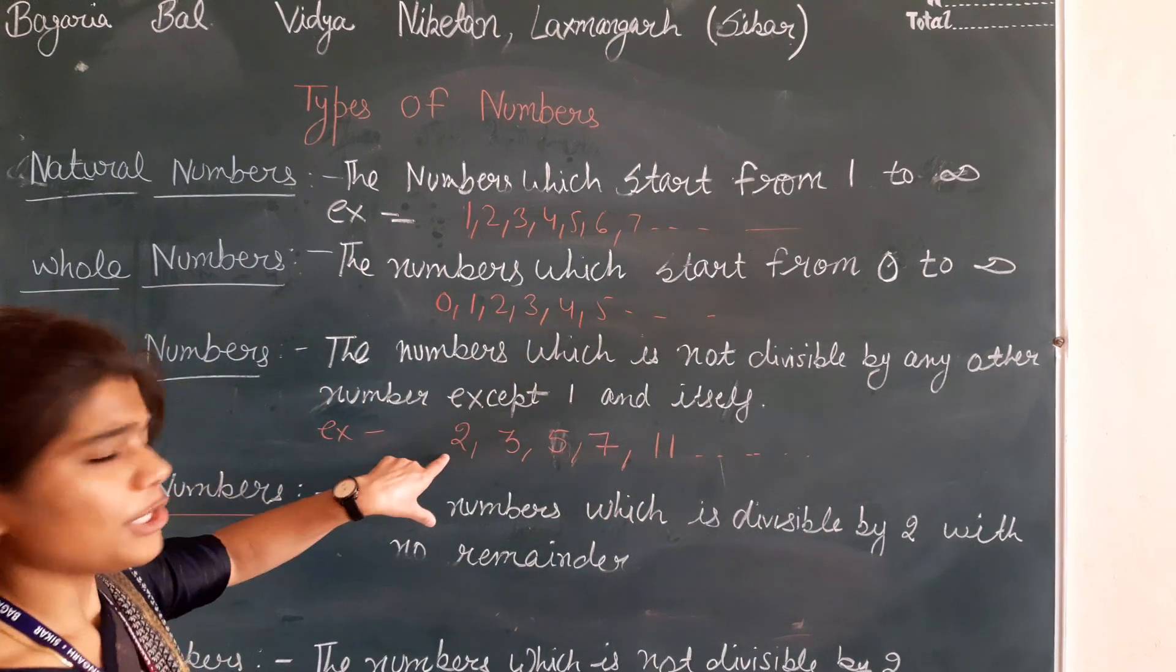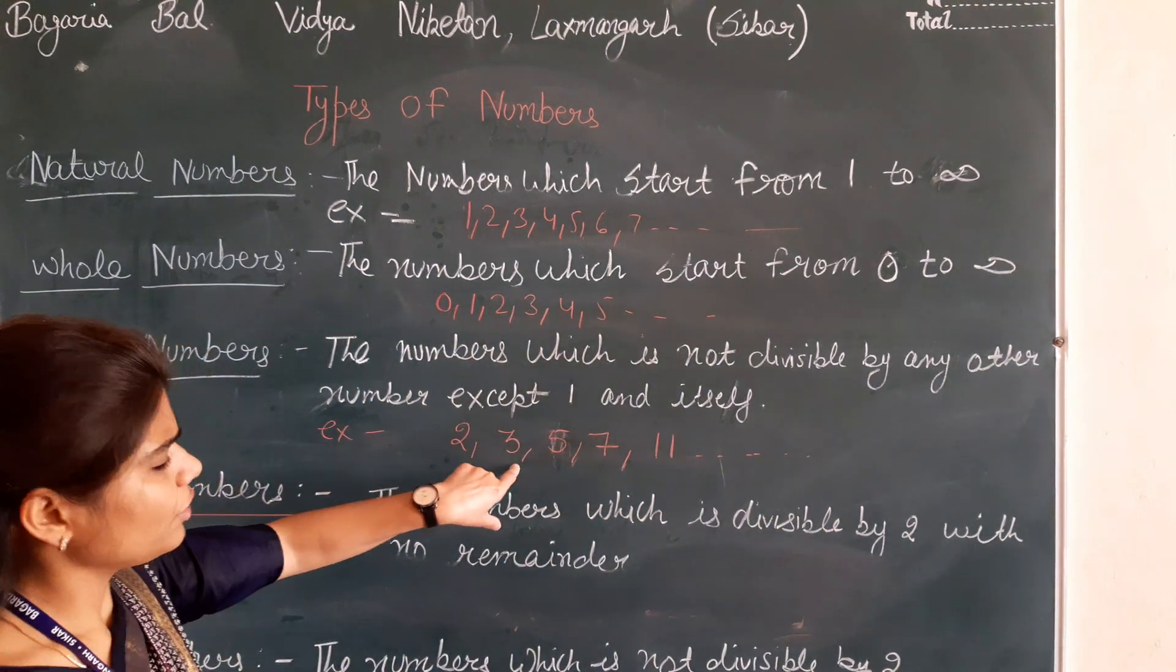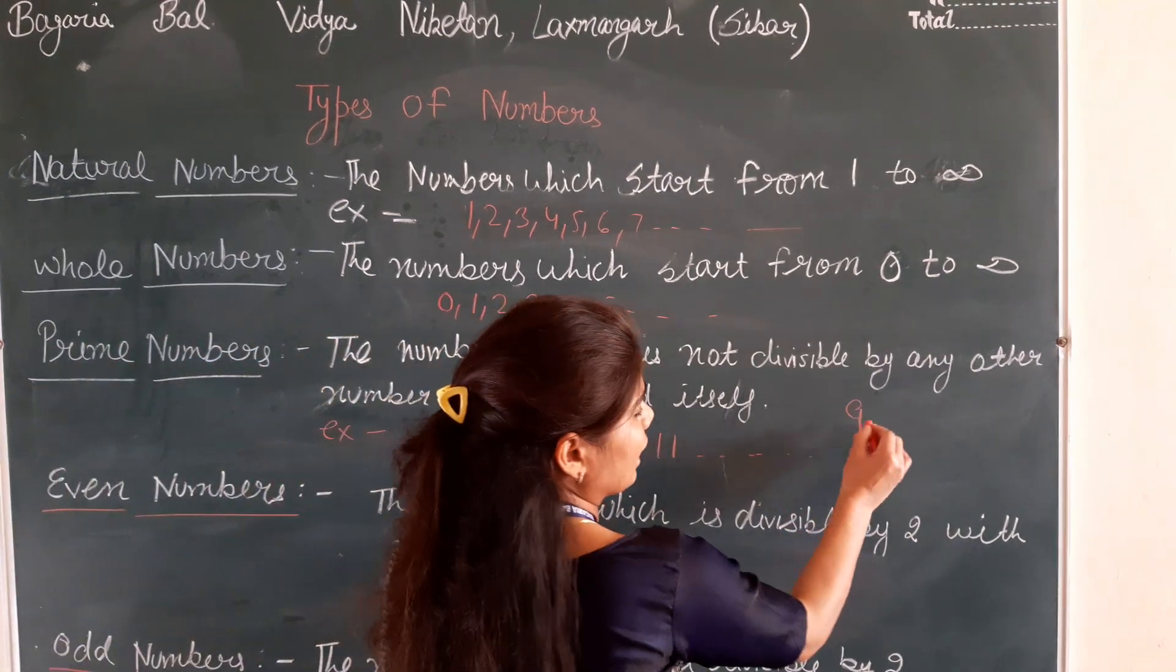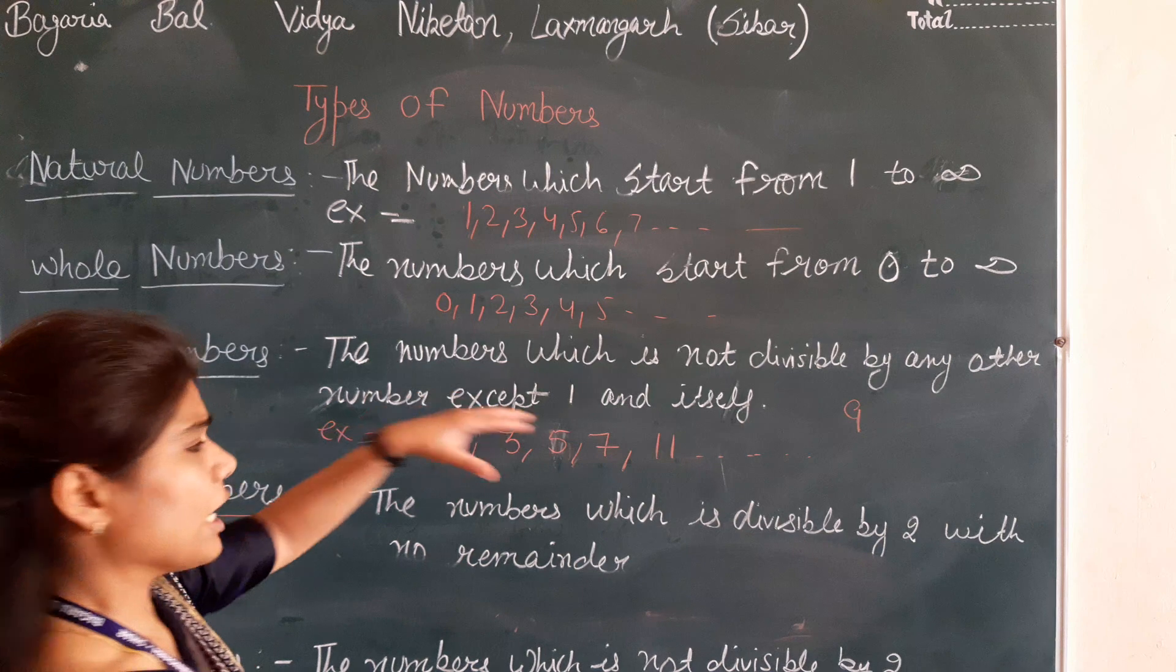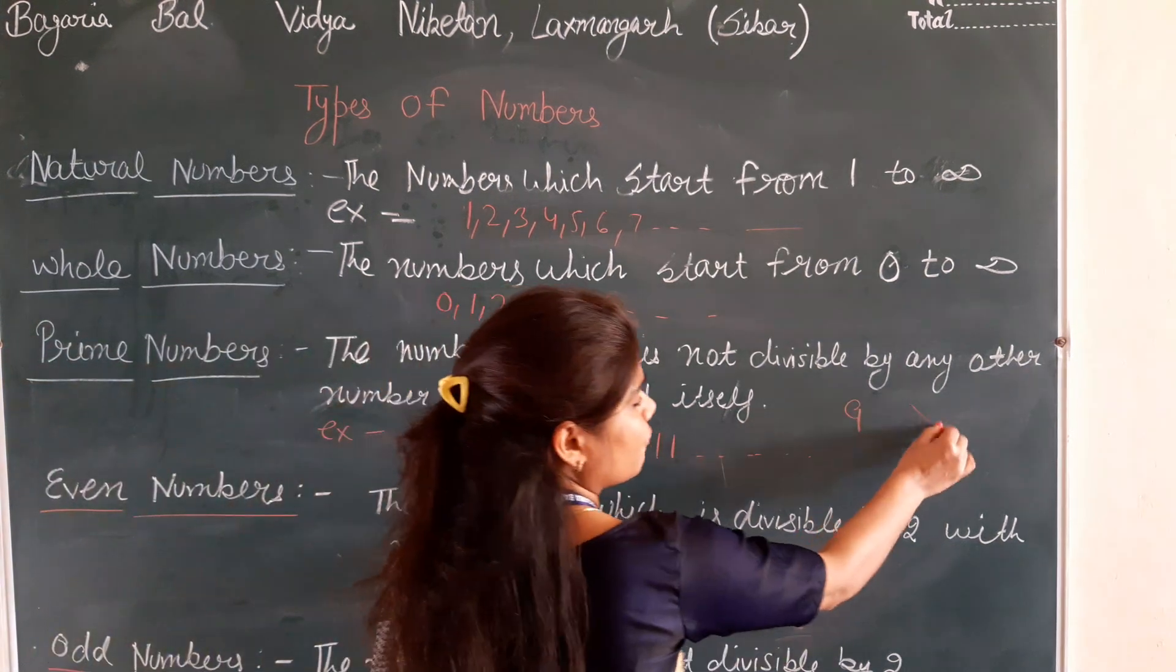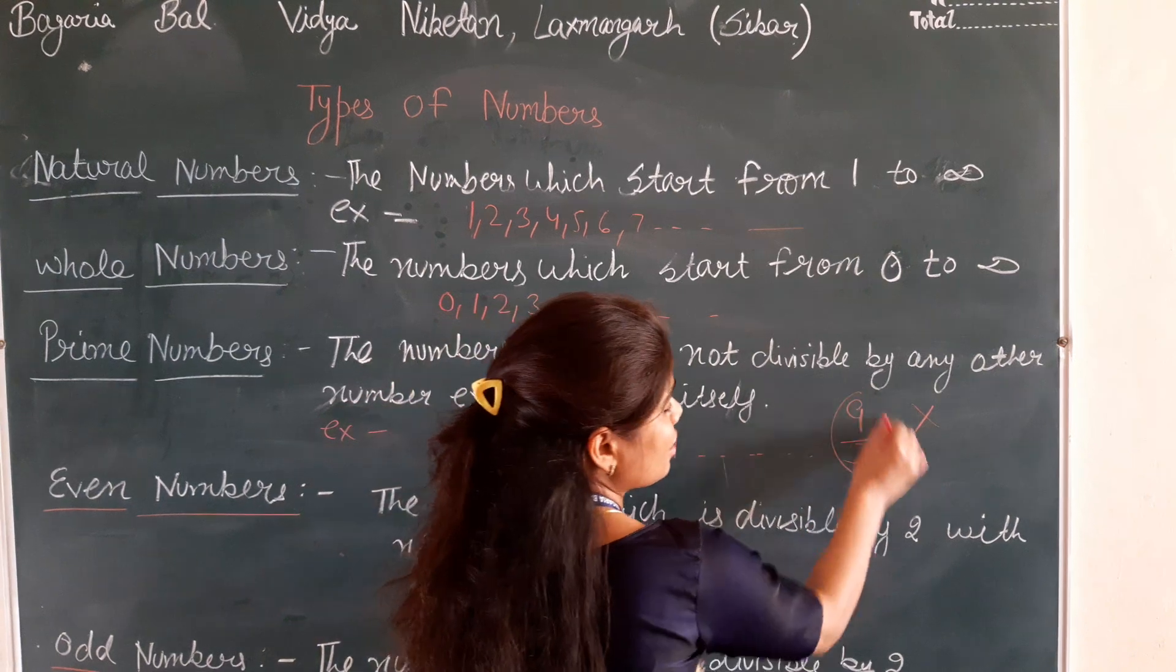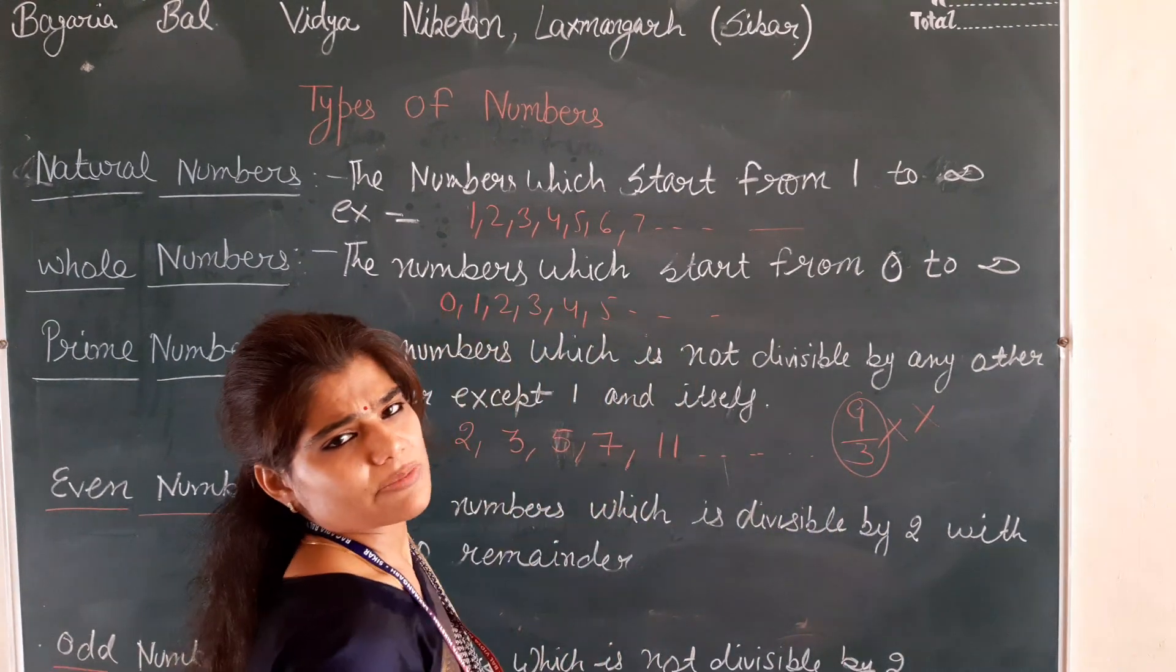So that number, see, 2 is divided by 2, 3 by 3, 5 by 5, 7 by 7, 11 by 11. So is 9 a prime number? No, this is not a prime number because 9 is divisible by 3.